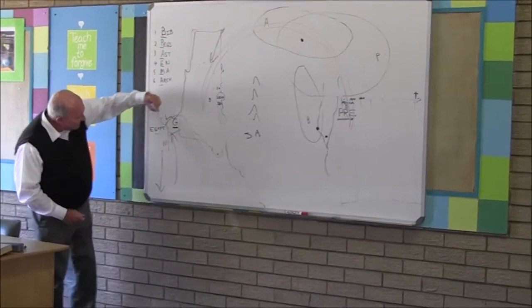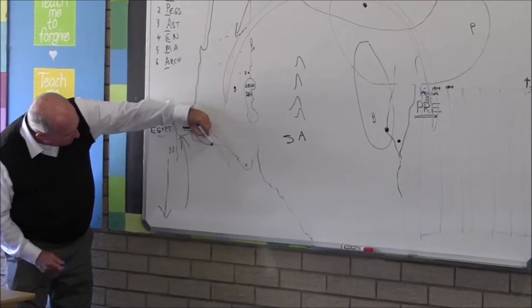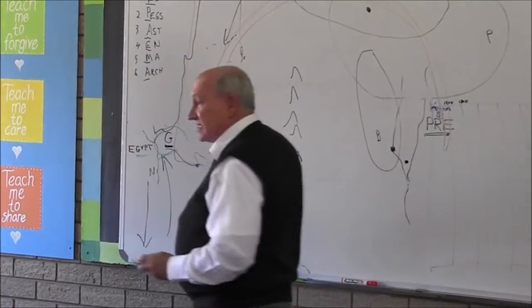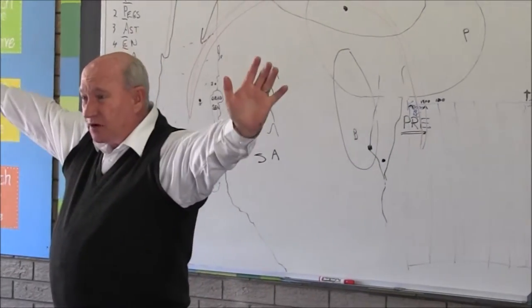Moses leads the people to a point somewhere there, and that's the Red Sea, and God causes the sea to part.